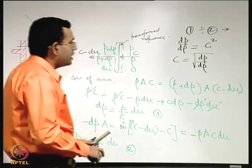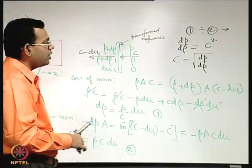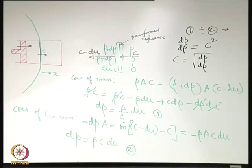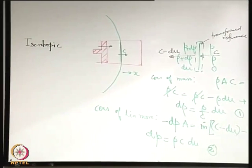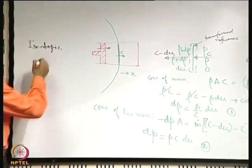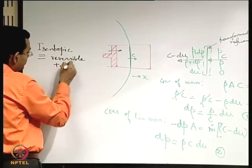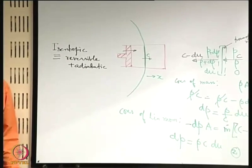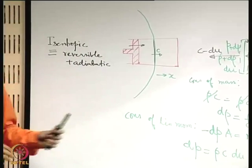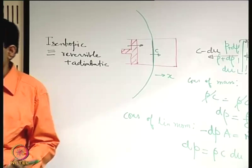The next important question is that when you write dp by d rho, it depends on the thermodynamic process by which it is occurring. To have a further simplification, we must refer to certain processes. In most of the examples we will discuss, we will be referring to the special type of flow known as isentropic flow — or thermodynamically, an isentropic process. An isentropic process is equivalent to a reversible and adiabatic process.